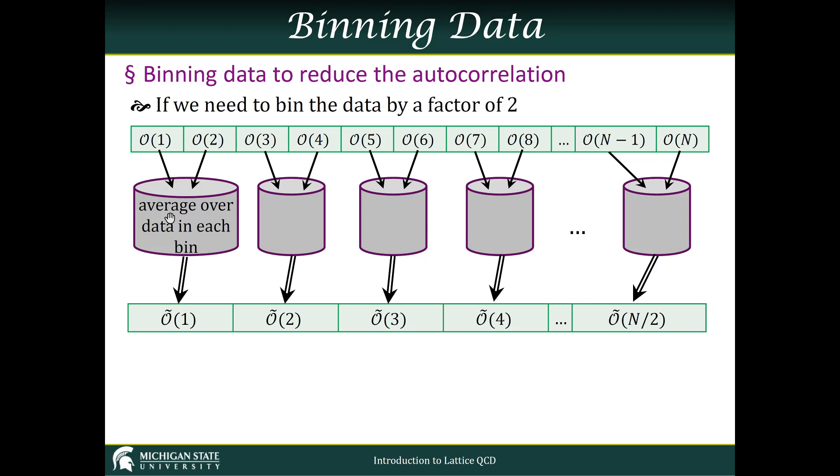But in this example, to make the diagram simpler, we've just used a factor of two. We take these, average them together, and call this modified binned observable Õ(1).